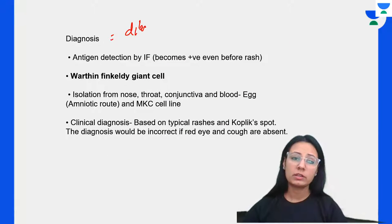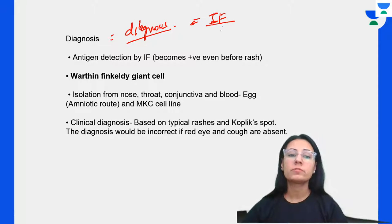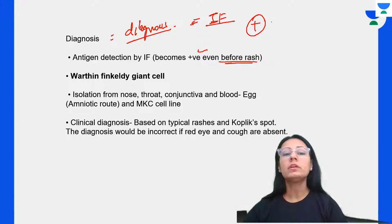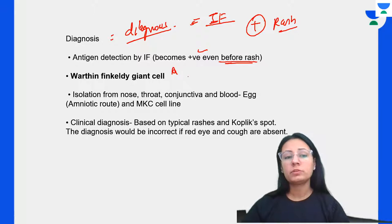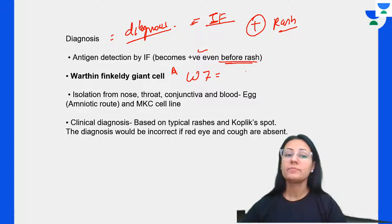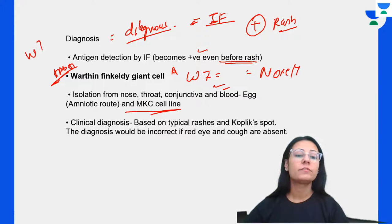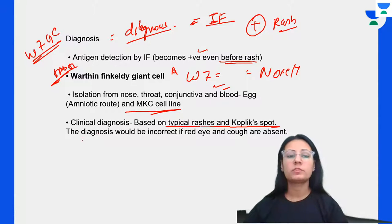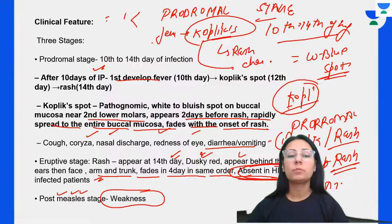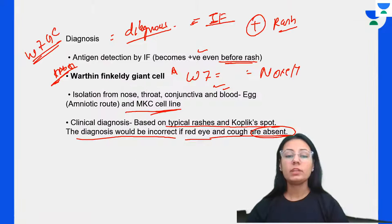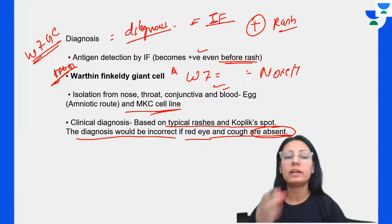Diagnosis of measles: detection by immunofluorescence, which becomes positive even before the rash. Very important is the Warthin-Finkeldey giant cell — isolated from the nose, conjunctiva, and blood. Clinical diagnosis is based on the typical rash and Koplik spots; the diagnosis would be incorrect if red eye and cough are absent.